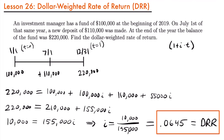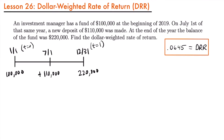As you can see, solving for the dollar-weighted rate of return is a fairly easy process — a lot simpler than solving for the internal rate of return. But just as a comparison, let's look at how we would calculate the internal rate of return for this same scenario, just so that you can see that those rates would be different and that the way we solve for them is also different.